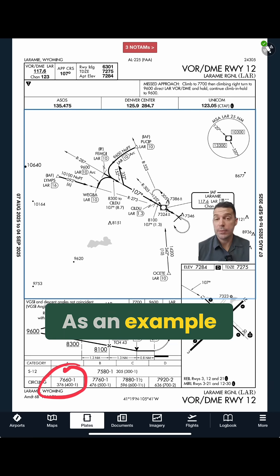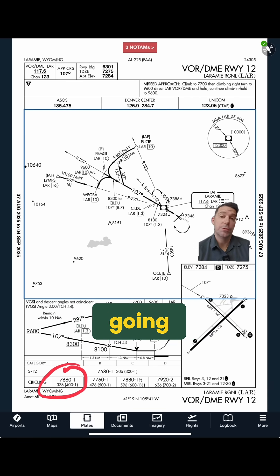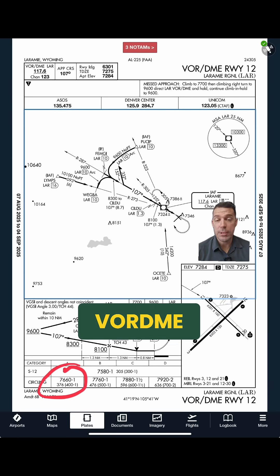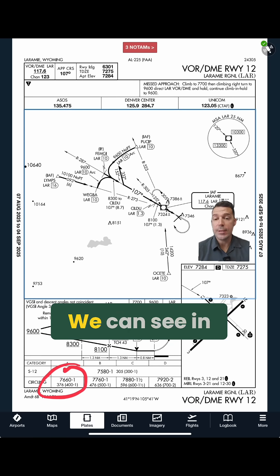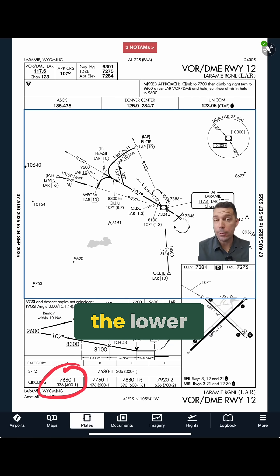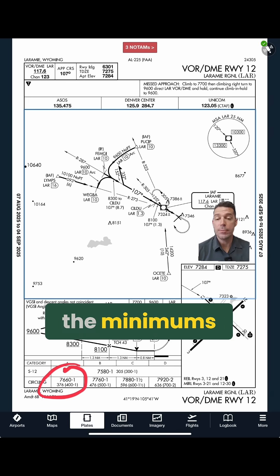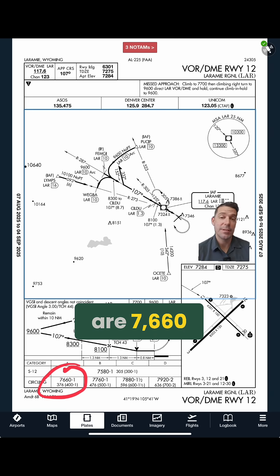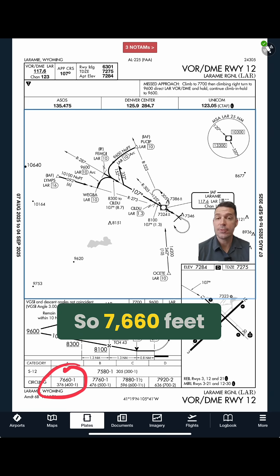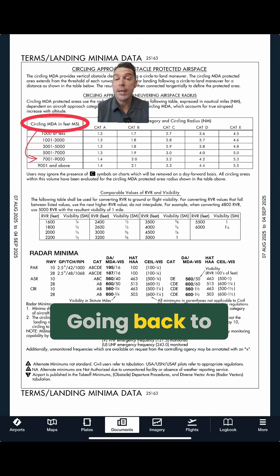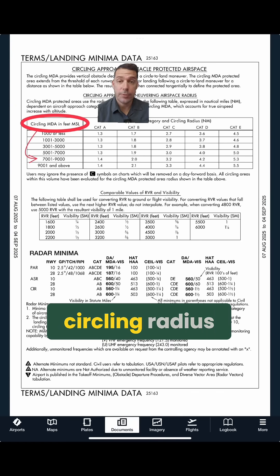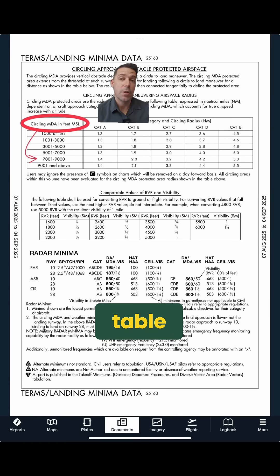As an example, let's say we're going to do the VOR DME Runway 1-2 approach here at Laramie. We can see in the lower left-hand corner the minimums are 7660 feet MSL.